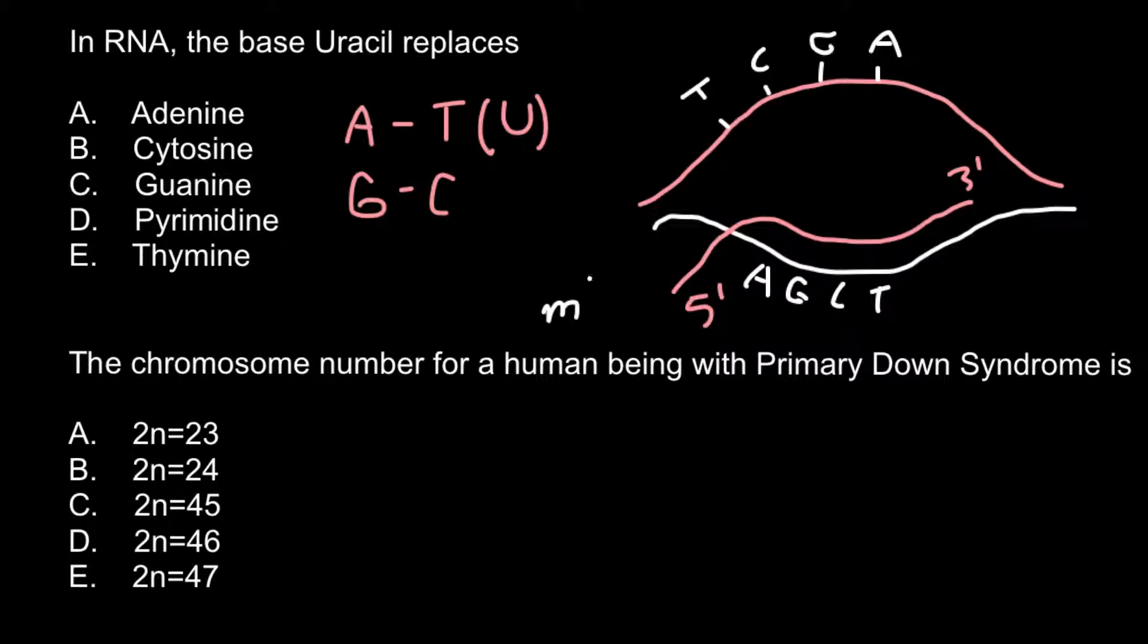On the mRNA we would have uracil that would base pair with adenine, here we would have cytosine that would base pair with guanine, guanine that would base pair with cytosine, and adenine. As you see, the code of this mRNA would be the same as code on this strand of the DNA.